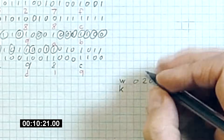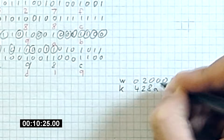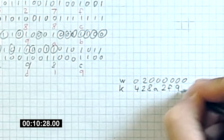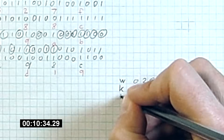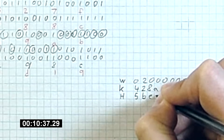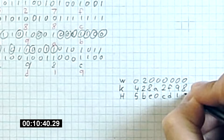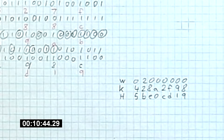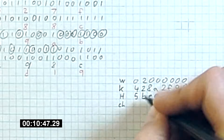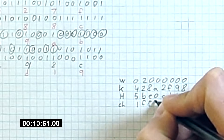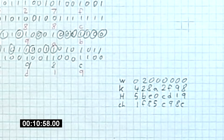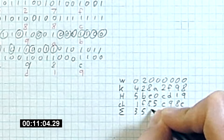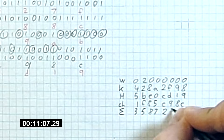We also take another constant provided by the NSA: 428A2F98. Then we take our value H, which is just the same value we started with, unchanged: 5BE0CD19. We take our choice value computed earlier: 1F85C98C. And we take our sigma summation of E, which was 35872B.